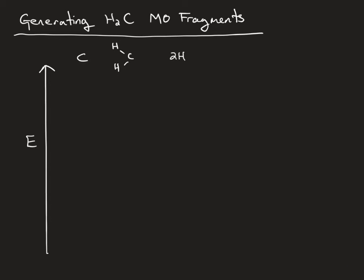We're now going to generate our CH2 molecular orbital fragment. This is going to look similar to the molecular orbital diagram we generated for water in a previous video. We're going to have our carbon 2p orbitals, which go with A1, B1, and B2 symmetry, and the carbon 2s, which goes as A1 symmetry. And we're going to have our two SALCs generated from the hydrogens, which have B2 symmetry and A1 symmetry.